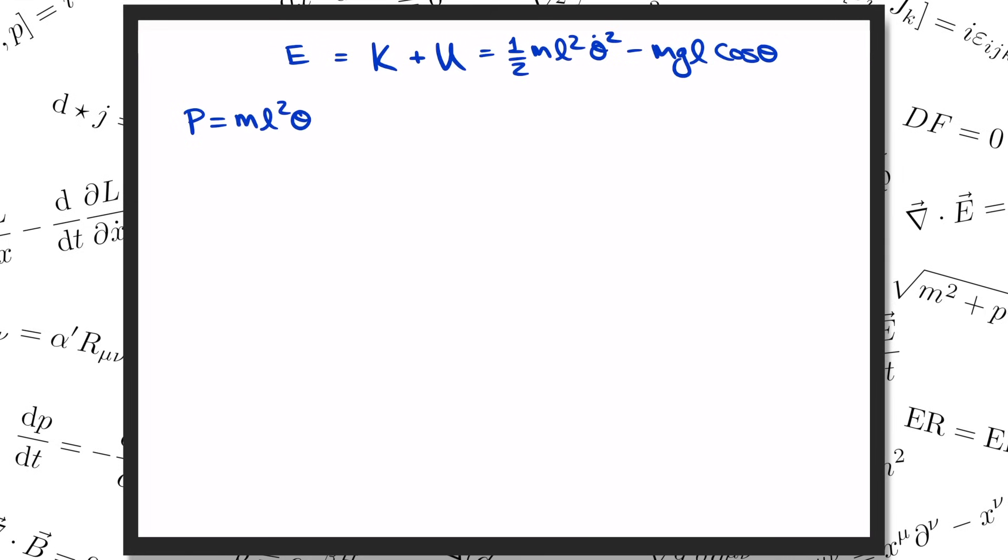That means we can write the total energy in terms of theta and p as p squared over 2 mL squared minus MgL cosine theta. This quantity is called the Hamiltonian and it's the starting point for Hamiltonian mechanics just as the Lagrangian was the starting point for Lagrangian mechanics. Whereas we used the Lagrangian to write down the Euler-Lagrange equation, we'll use the Hamiltonian to write Hamilton's equations.